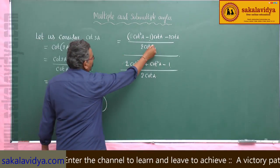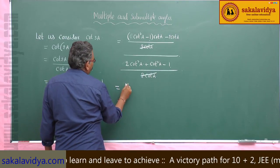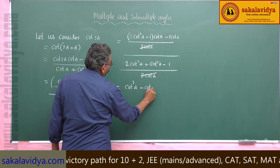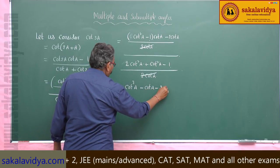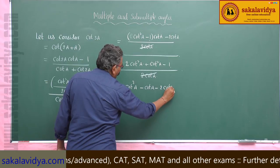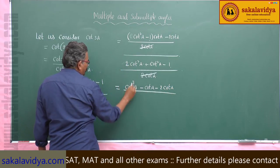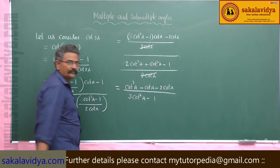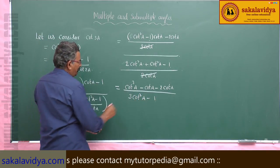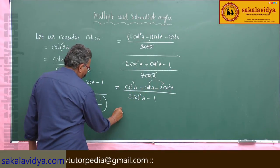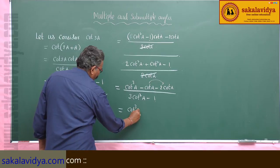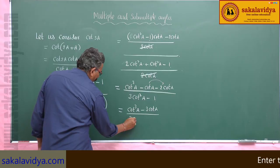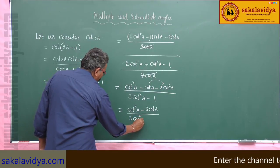After cancellation, the numerator gives us cot³(a) - 3cot(a) and the denominator gives 3cot²(a) - 1. Let us simplify these two to confirm the result.